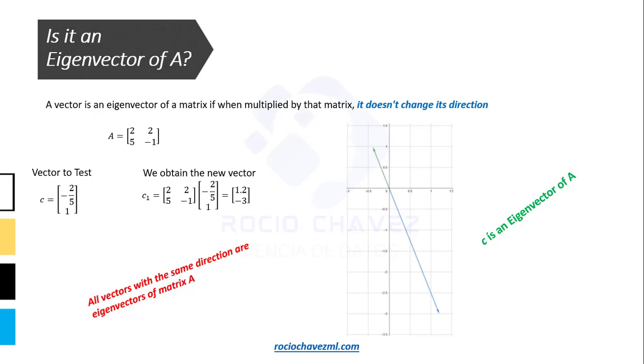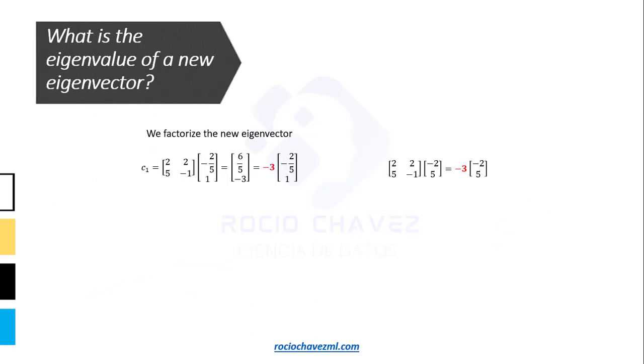That is, not only there are n eigenvectors of an n-by-n matrix, but all vectors that are on the straight line formed by the origin, and each of the eigenvectors are eigenvectors of the matrix. Now, what value does the eigenvalue of a new eigenvector have? If we factorize a new eigenvector, we can see that the eigenvalue does not change. It remains minus 3.